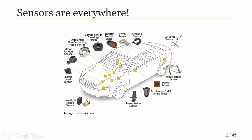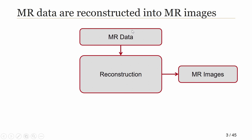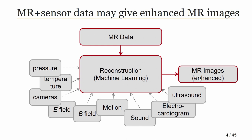Sensors are everywhere — there are hundreds of them on a car, and of course there are sensors on MR scanners too. Traditionally, MR imaging has involved acquiring MR data and reconstructing it into MR images. But our vision is that in the future there might be far more hardware components gathering information about different physical parameters — whether about the patient through cameras or motion sensors, or about the scanner itself, such as electromagnetic fields or the sound it makes — and all of this information will feed into more sophisticated reconstruction algorithms to make better and more useful images.